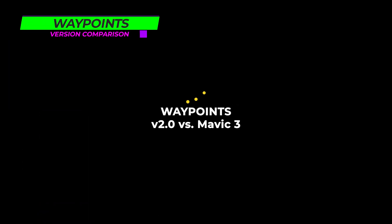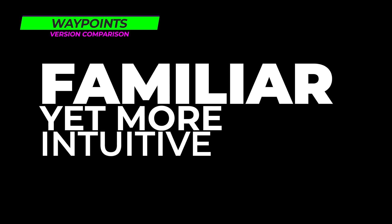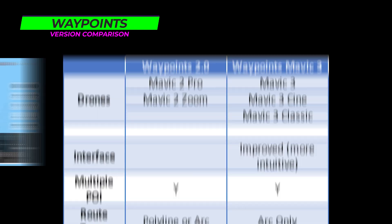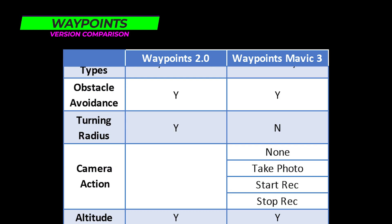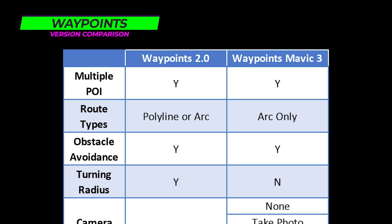If you have experience with Waypoints 2.0 on the Mavic 2, I think you'll find it familiar, but somehow it seems more intuitive. I like how the waypoints and points of interest are listed — it just makes it easier to edit. Most of the features of the original still exist, even if they've changed some of the naming. So let's do a quick side-by-side comparison, highlighting the differences. In the original, there was a global setting to select Polyline or Arc. This option is no longer available — now it's just fixed on Arc, which, as far as we're concerned, is fine. We pretty much only used Arc anyway.